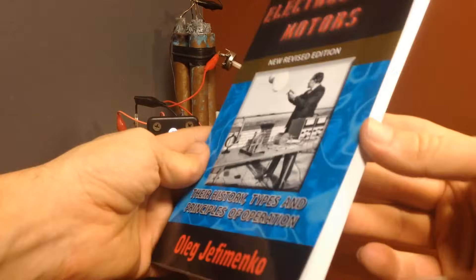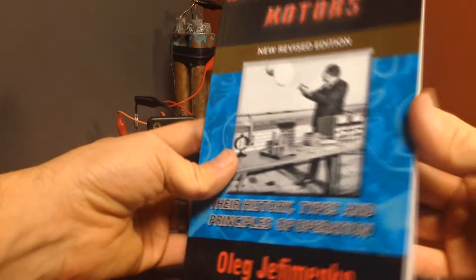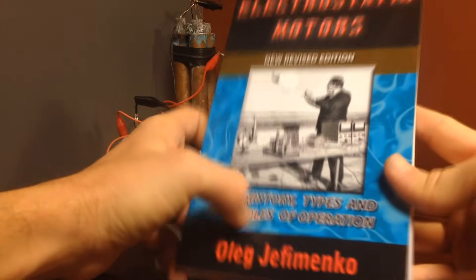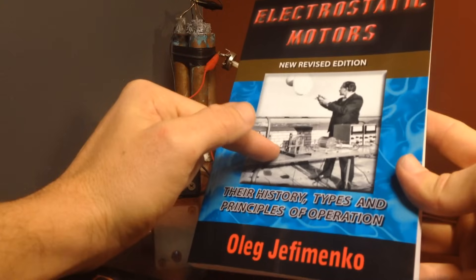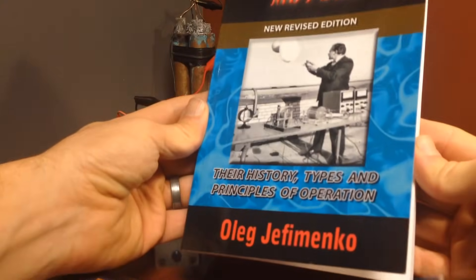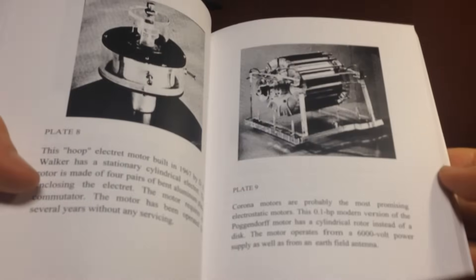Okay, I want to give a quick book review on three books that I picked up from Amazon. You can buy these three books in a set for $50. The first book is Electrostatic Motors by Oleg Jeff Aminko. I've read some of this guy's work scattered around the internet, but I went ahead and bought the book so I could get all of the work in one place. This is a treasure trove of information on electrostatic motors as well as atmospheric electricity.